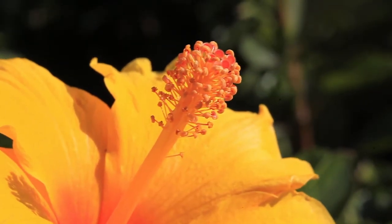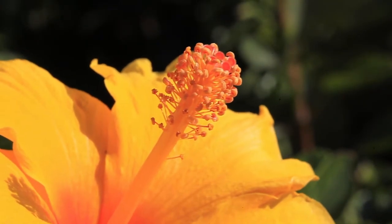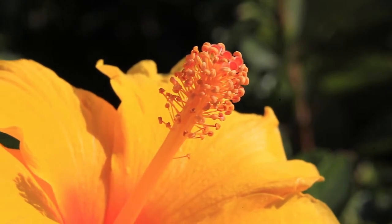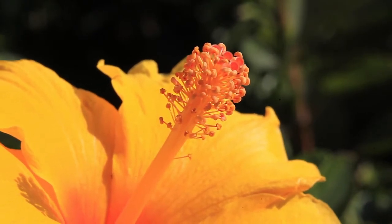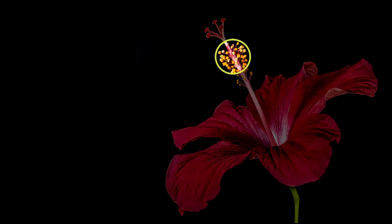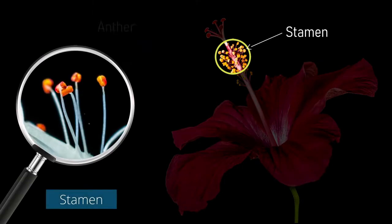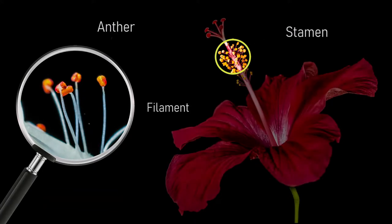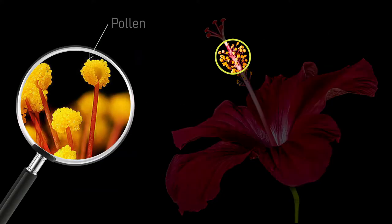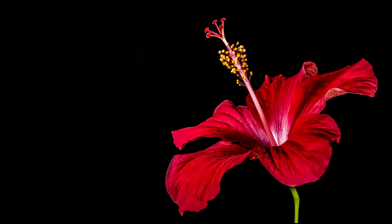At the center of the flower we find the male and the female parts. Most plants have both these parts in the same flower. The male part is called the stamen. It is made up of an anther which is supported by a long filament. The pollen is produced in the anther. Pollen is necessary for the formation of seeds.